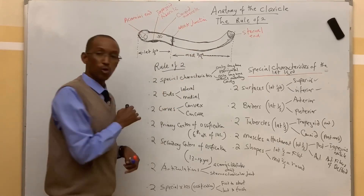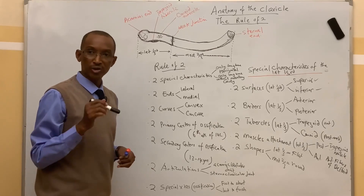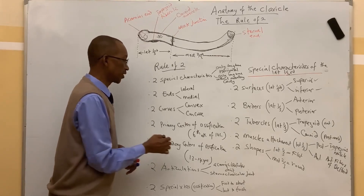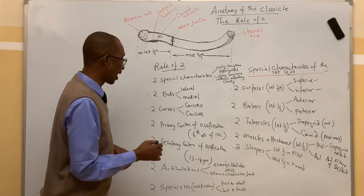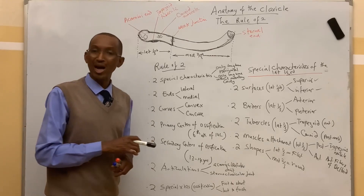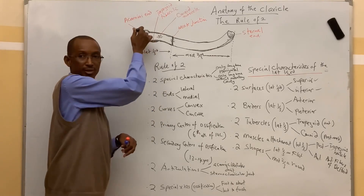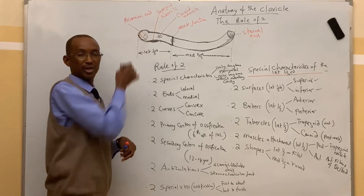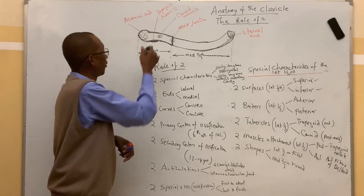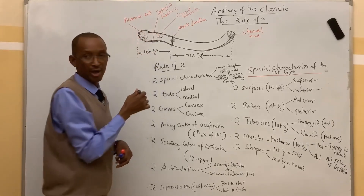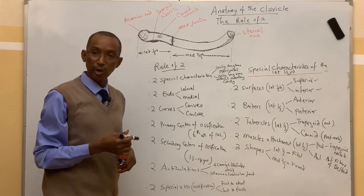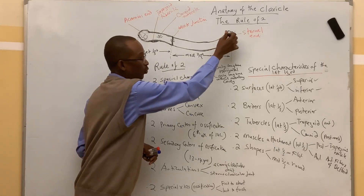The clavicle has two primary centers of ossification, which appear at six weeks of intrauterine life. It also has two secondary centers of ossification, which appear at 13 to 14 years of life. The clavicle also makes two articulations: the acromial end articulates with the acromial process of the scapula to form the acromioclavicular joint, and the sternal end articulates with the manubrium of the sternum to form the sternoclavicular joint.